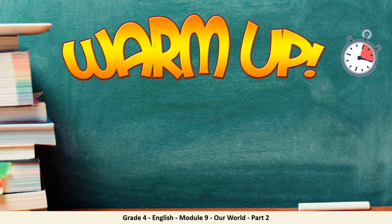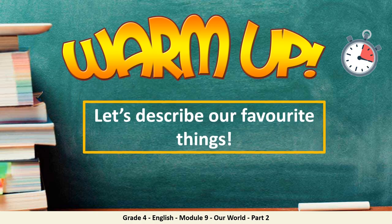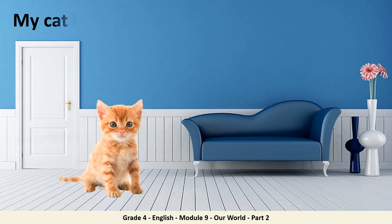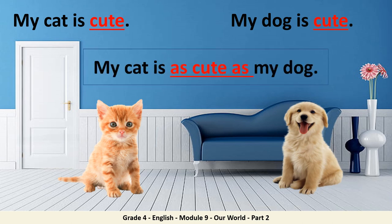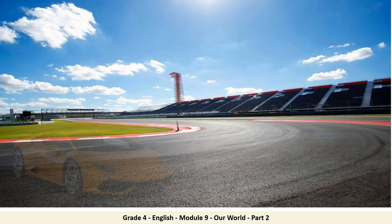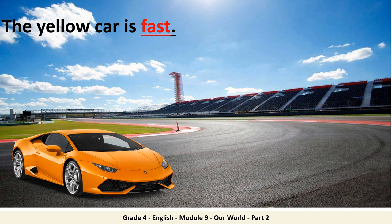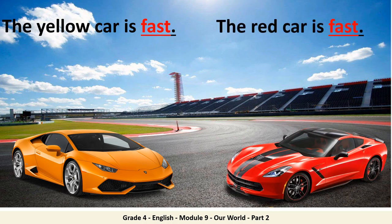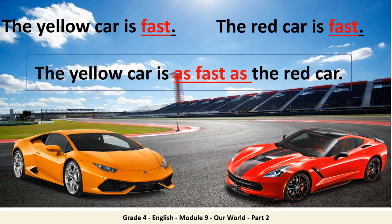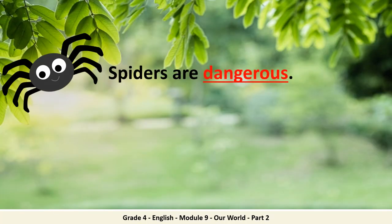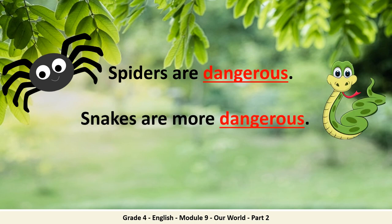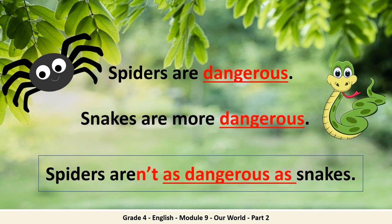Let's start our lesson with a warm-up activity. Are you ready? Let's describe our favorite things. My cat is cute. My dog is cute. My cat is as cute as my dog. The yellow car is fast. The red car is fast. The yellow car is as fast as the red car. Spiders are dangerous. Snakes are more dangerous. Spiders aren't as dangerous as snakes.